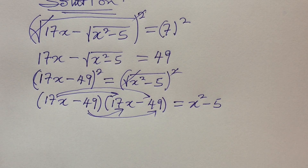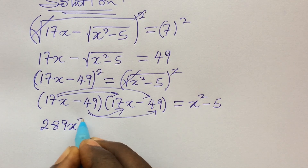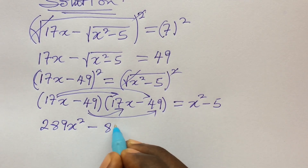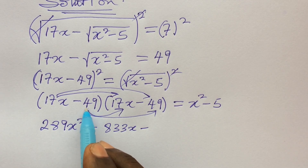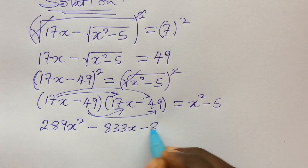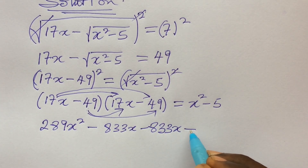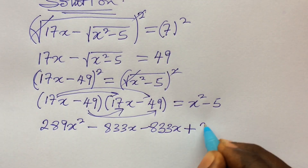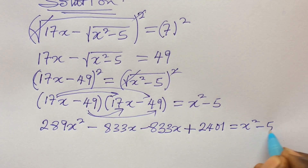17x times 17x gives us 289x squared. 17x times 49 gives us 833x. Then minus 49 times 17x gives us another 833x. And, because minus times minus gives plus, 49 times 49 gives us 2401. Everything equals x squared minus 5.